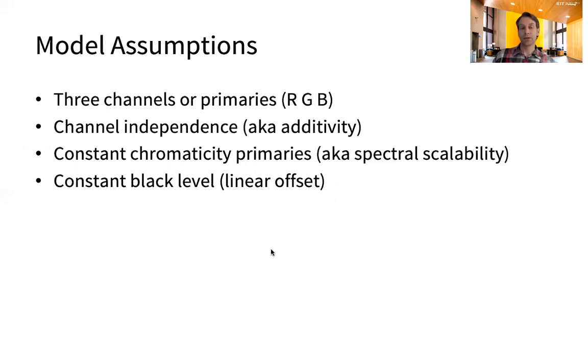Primaries with constant chromaticity, also known as spectral scalability, which means that the chromaticity of the primary does not change with its intensity. And constant black level, which can be treated as a linear offset. This is important because LCDs and CRTs typically have a black level that is not truly black because of light leaking through the liquid crystal or because of flare.